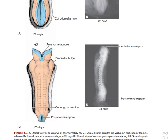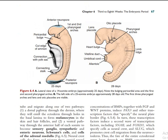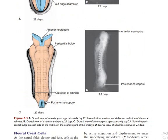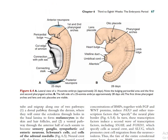In neural tube defects, the neural folds fail to fuse to form the neural tube. Anencephaly occurs when the upper portion does not close — the person will not have a brain. Spina bifida occurs when the lower portion does not close — the person will lack the vertebral column of the lumbar region. Spina bifida occulta has minimal symptoms; other forms include meningocele, meningomyelocele, and myelomeningocele.